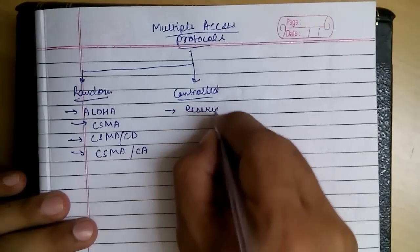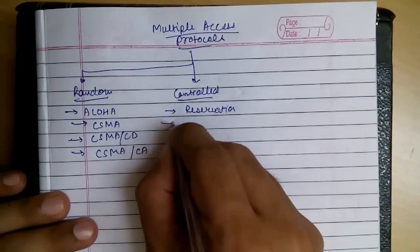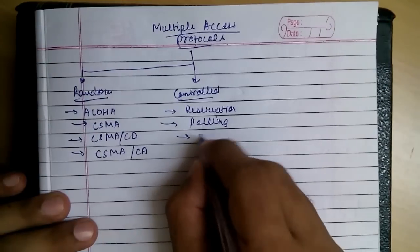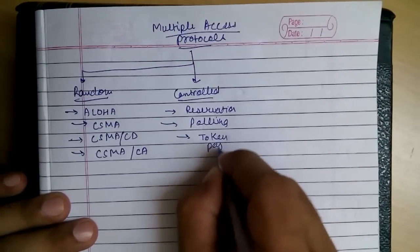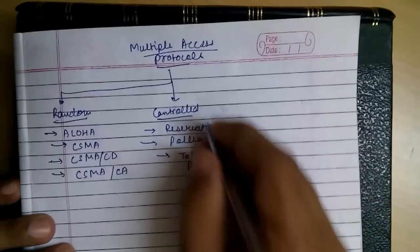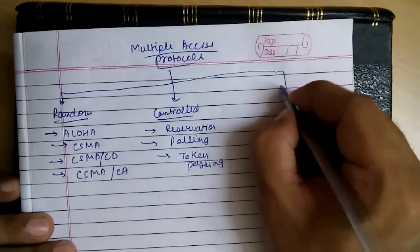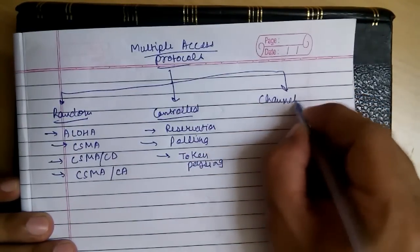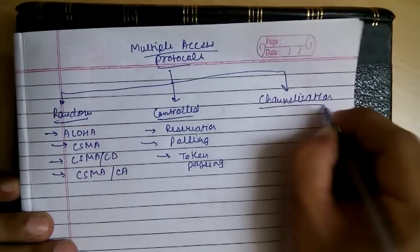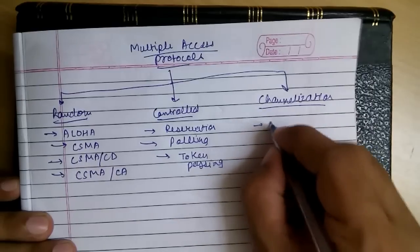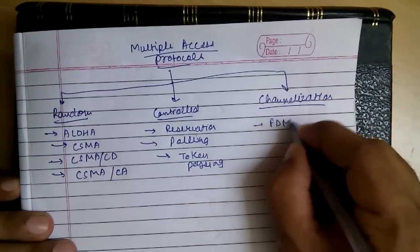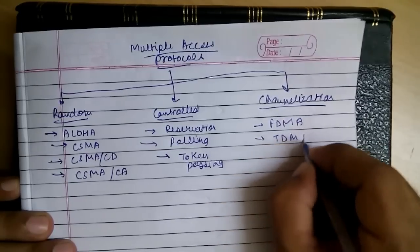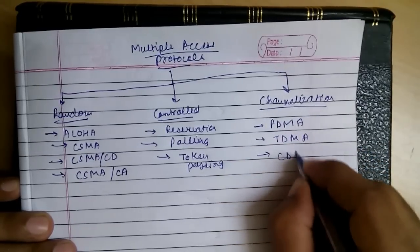The second is controlled: reservation, polling, and token passing. The third is channelization: FDMA, TDMA, and CDMA.